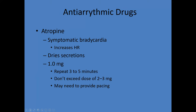Anti-arrhythmic drugs: atropine for symptomatic bradycardia — not a well-trained athlete, but someone with heart rates in the forties, dizziness, altered mental status. Atropine is still recommended and can also dry secretions. The recommended dose is back to 1 mg, repeat every 3 to 5 minutes, not to exceed 2 to 3 mg total. Transcutaneous pacing is often the direction you'll go for patients with symptomatic bradycardia.